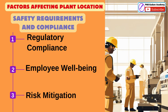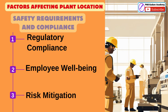Safety Requirements and Compliance: Regulatory Compliance — the plant location must meet safety requirements. Compliance with safety regulations and standards is essential to prevent accidents and avoid legal liabilities. Employee Well-being: Ensuring a safe working environment is crucial for employee well-being and productivity. Risk Mitigation: Adhering to safety standards helps mitigate risks associated with industrial operations, protecting both personnel and assets.